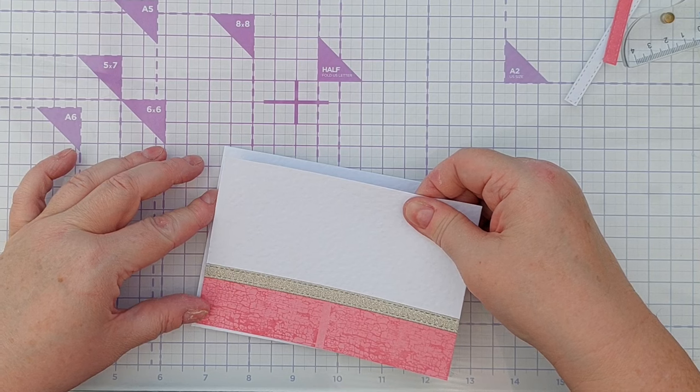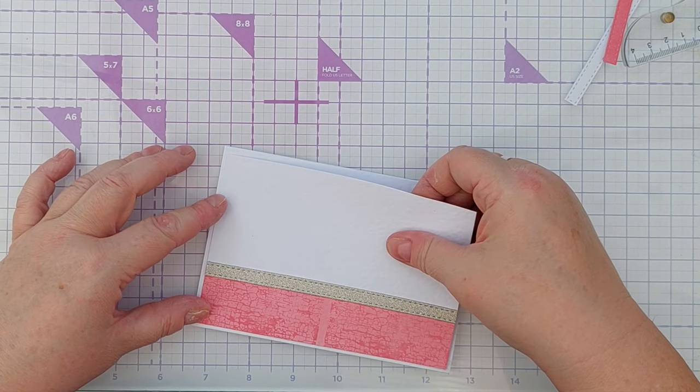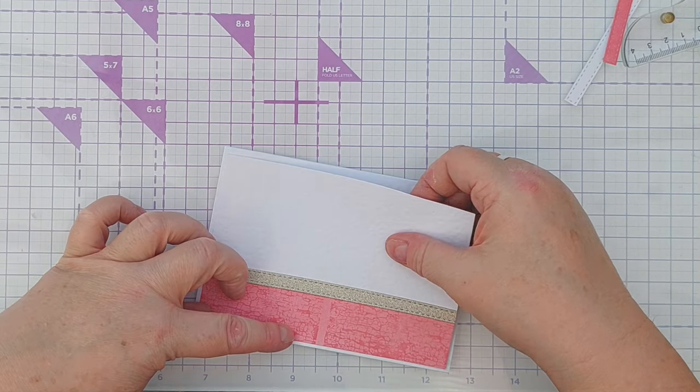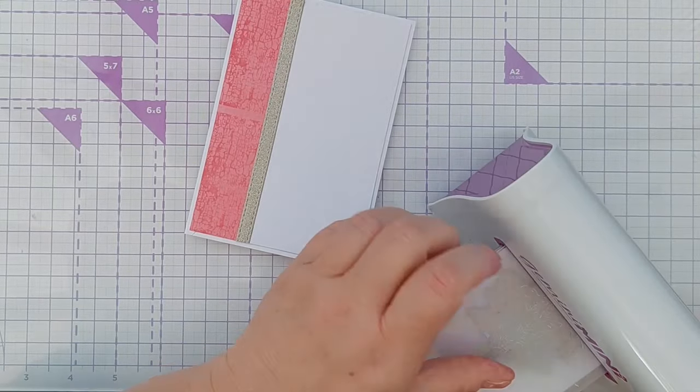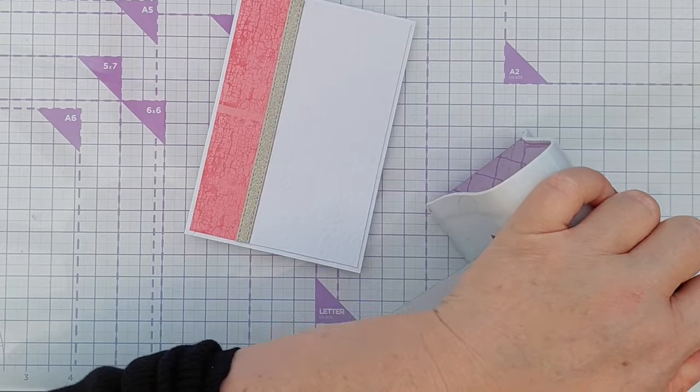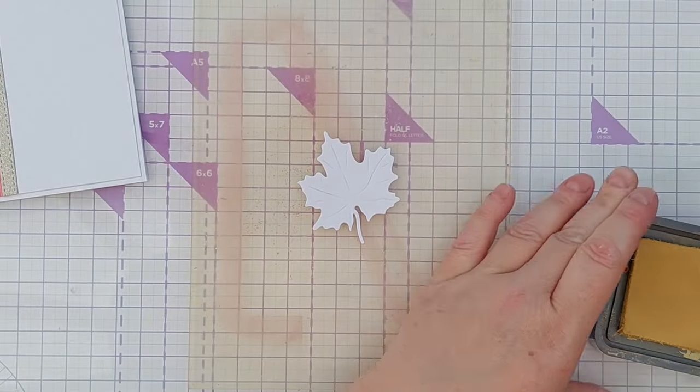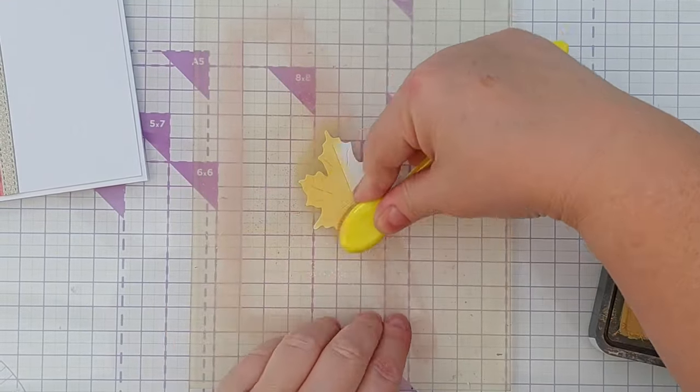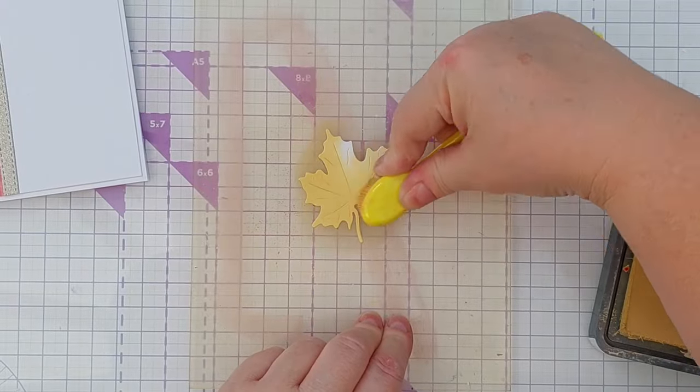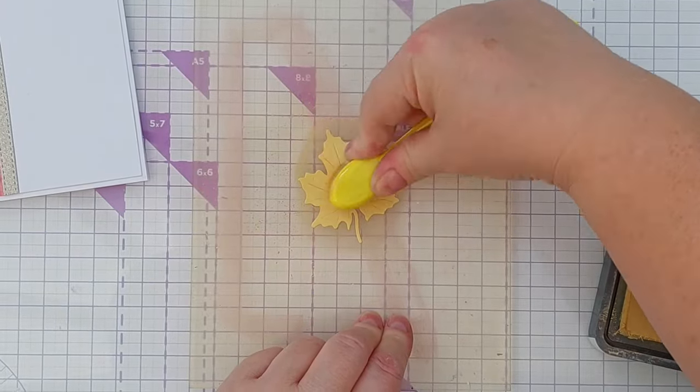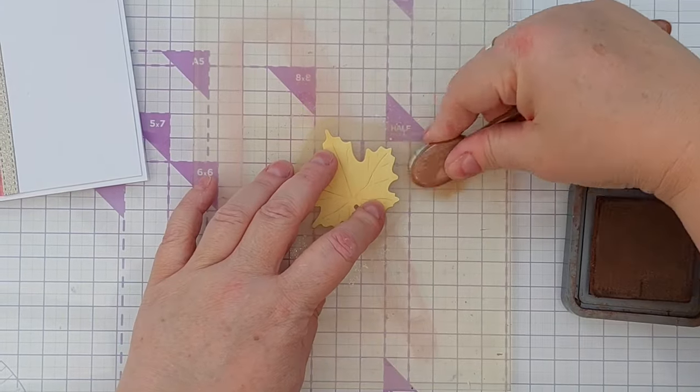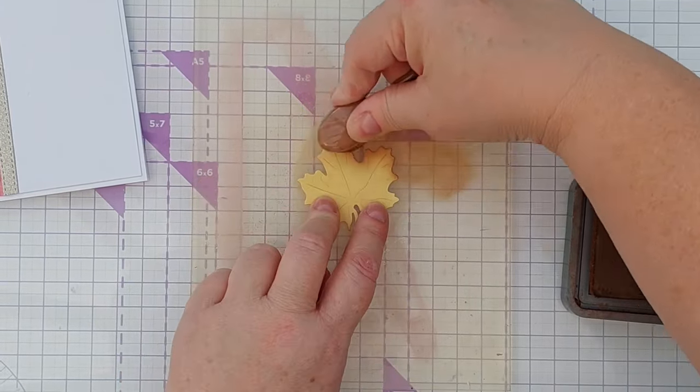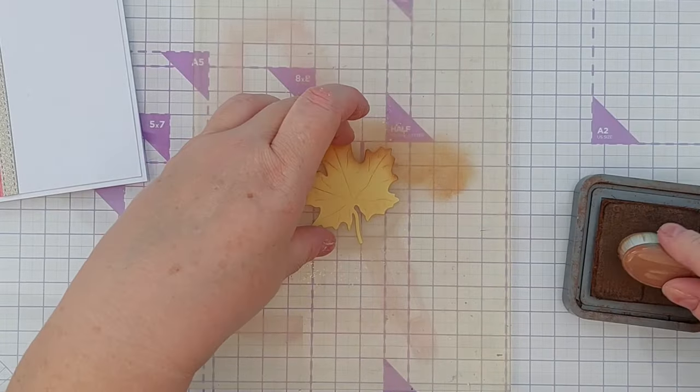To decorate my panel and to cover up that gap in the bark stamping, I wanted to create a nice big leaf. So I die-cut one from smooth white card. I blended on some scattered straw distress oxide for an autumnal fall feel. I then added some vintage photo around the edge to give the leaf a bit of interest, a bit of definition.